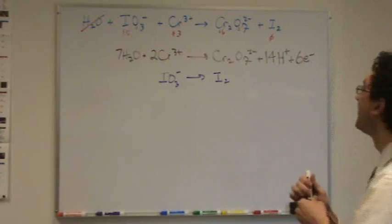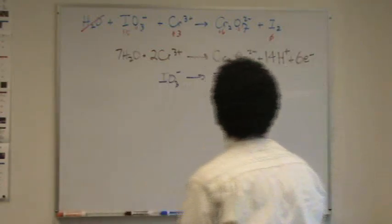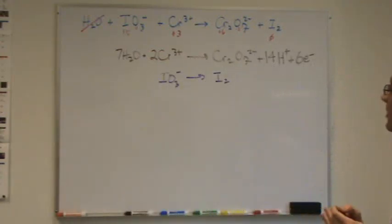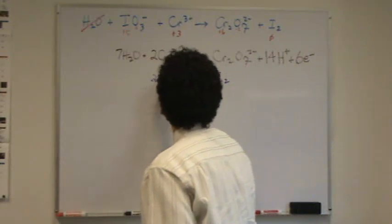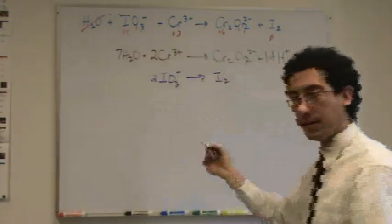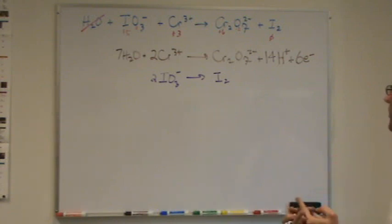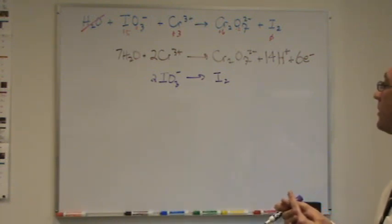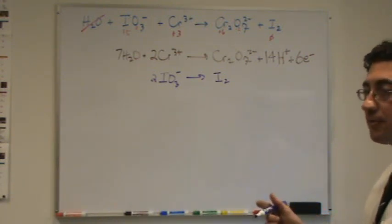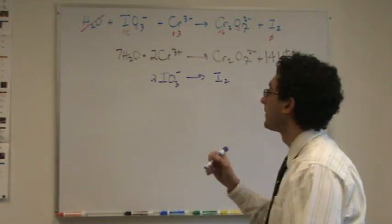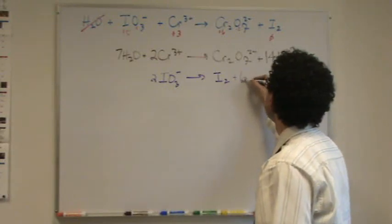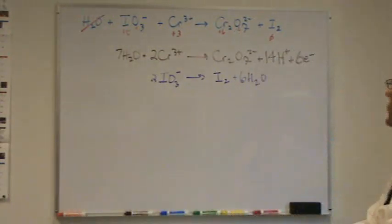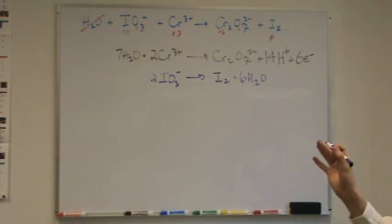Let's get our other pen and we'll do the reduction. First step, balance anything that's not oxygen or hydrogen. In this case, it has to be iodine. And, it does work here. Two and two. I have to do it. Second step is, oxygen. Right. How many waters do I need to add? Six. Six. Two times three. Plus six H2O. Okay. So, that's, oxygen's on both sides. That's okay.